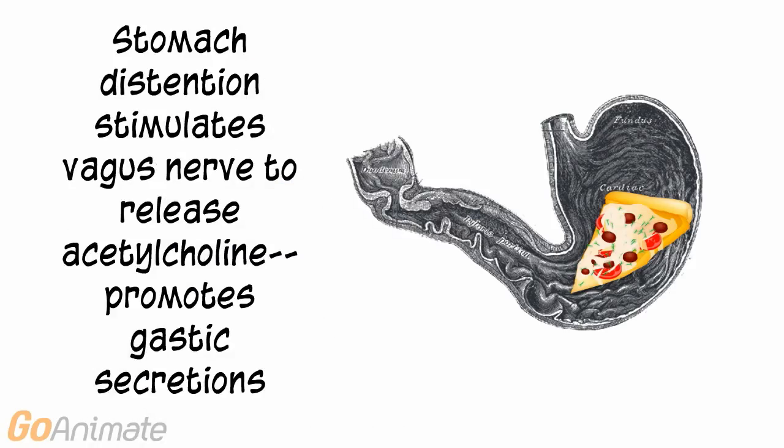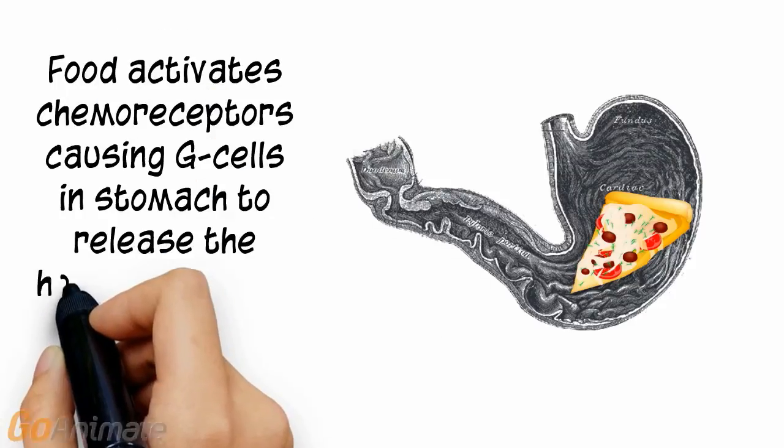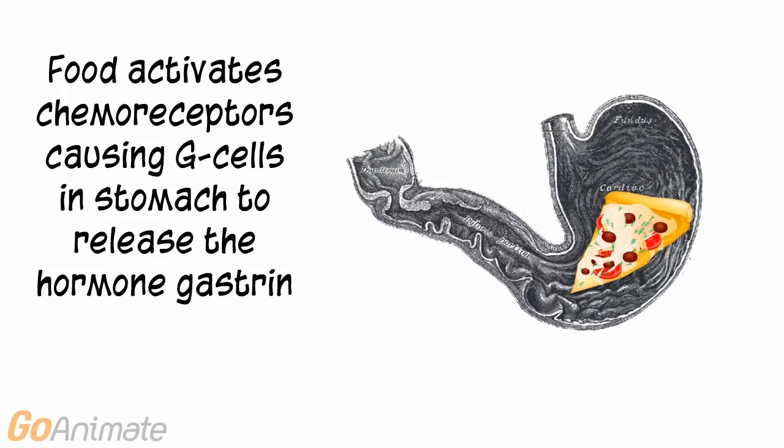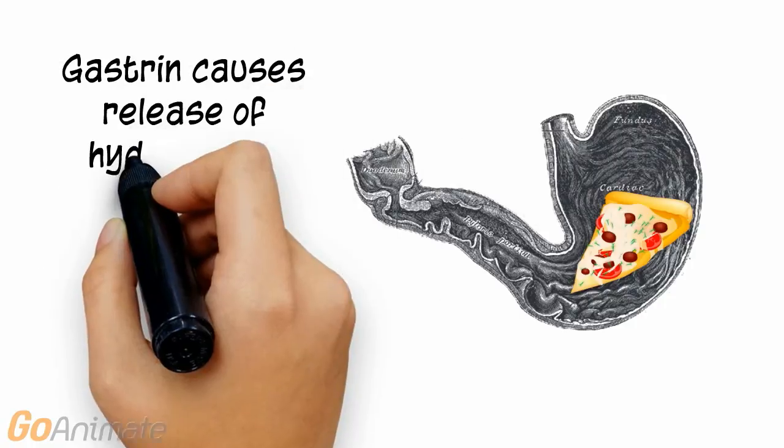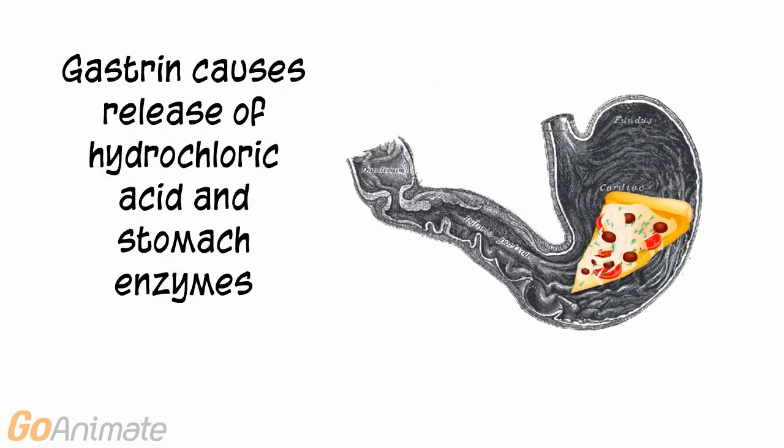Stomach distension stimulates the vagus nerve to release acetylcholine, which promotes gastric secretions. Food activates chemoreceptors, causing G cells in the stomach to release the hormone gastrin. Gastrin causes release of hydrochloric acid and stomach enzymes.